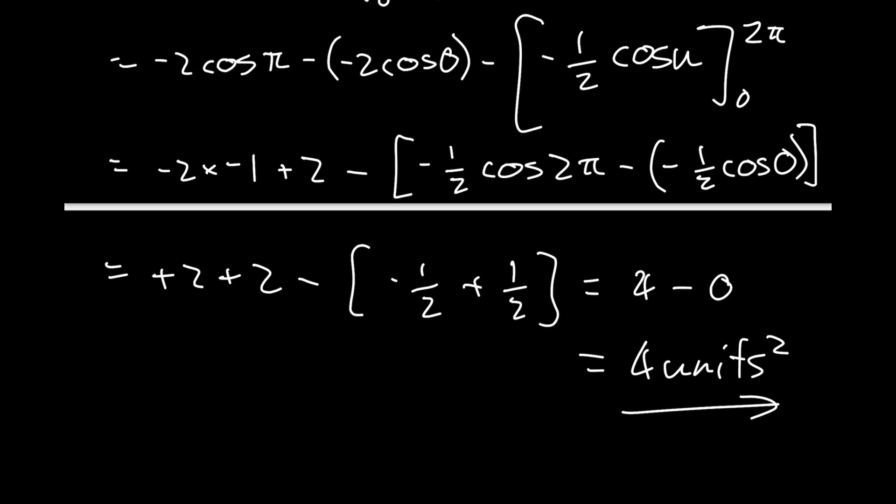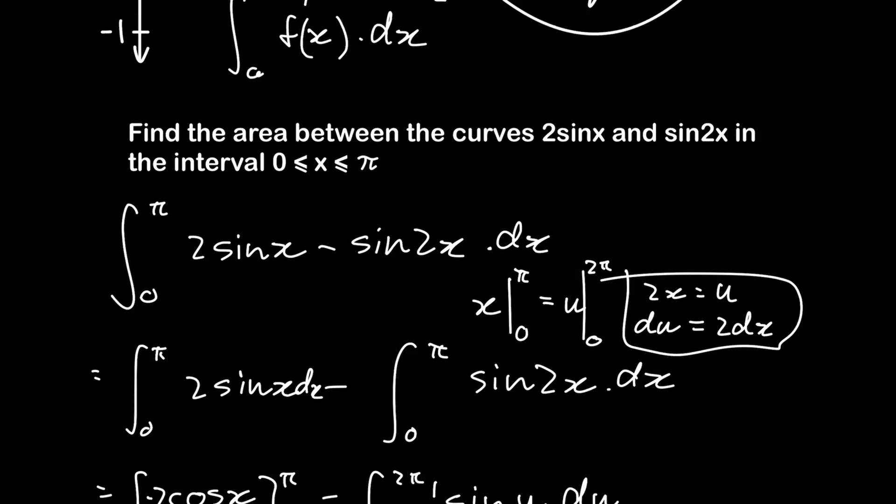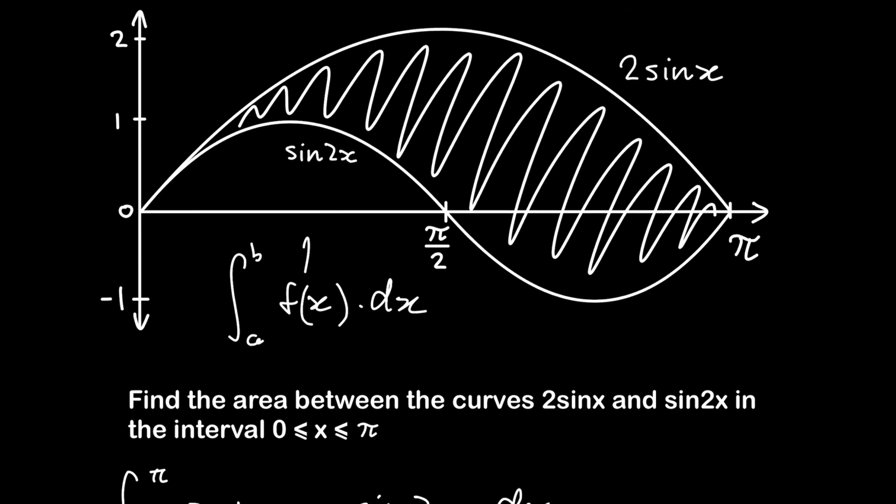That's the definite integral solved. We found that the area bounded by these two curves, 2sin(x) and sin(2x), is 4 units squared. If you found this video helpful, please like and subscribe. I'll see you for the remaining days of this countdown. Thank you.